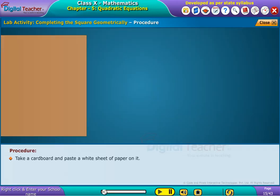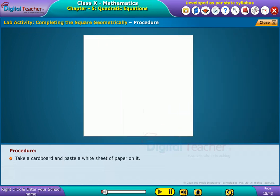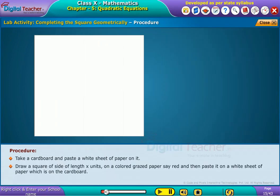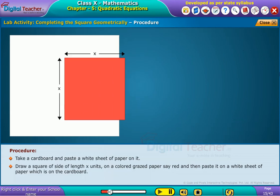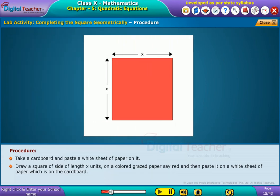Procedure. Take a cardboard and paste a white sheet of paper on it. Draw a square of side length x units on a colored glazed paper, say red, and then paste it on the white sheet of paper which is on the cardboard.